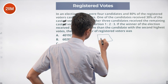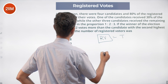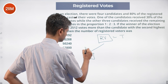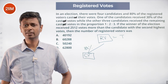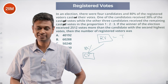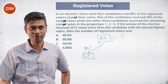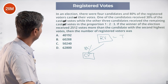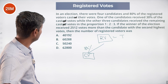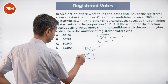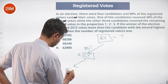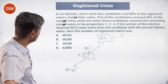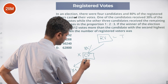80% of the registered voters cast their votes — cast, not caste, although in an election context that's something people talk about. We're talking about cast votes. So one of the candidates received 30% of the cast votes. Let's call total cast votes X. One candidate gets 30% of X while the other three candidates received the remaining cast votes in the proportion 1 is to 2 is to 3.